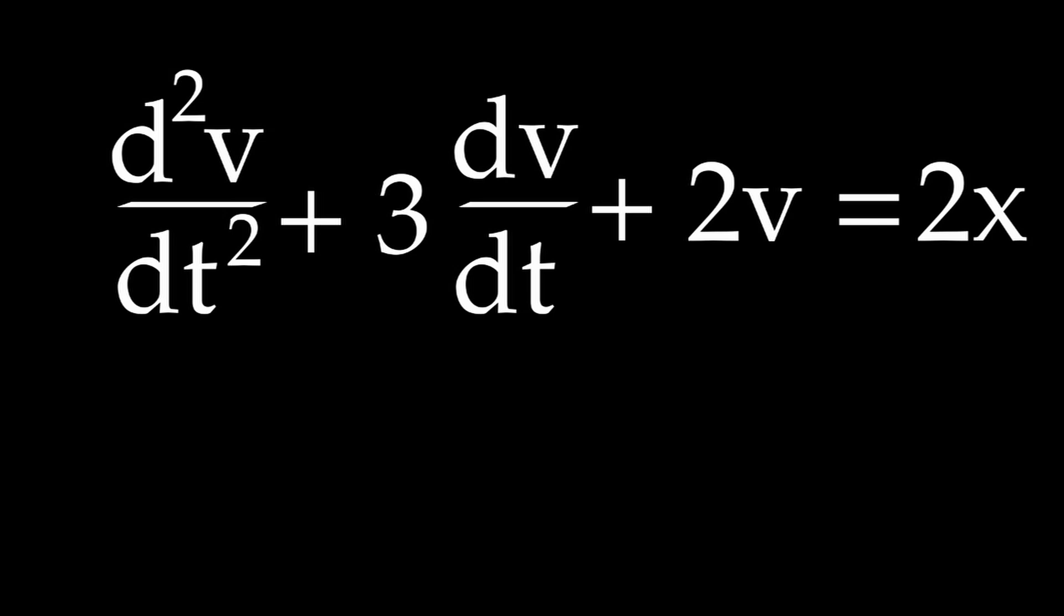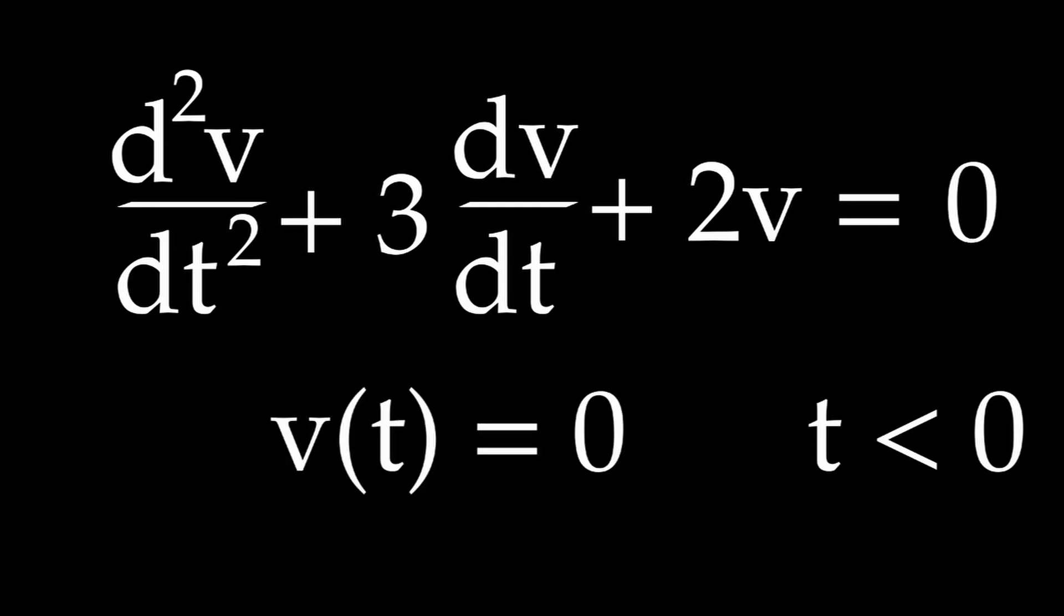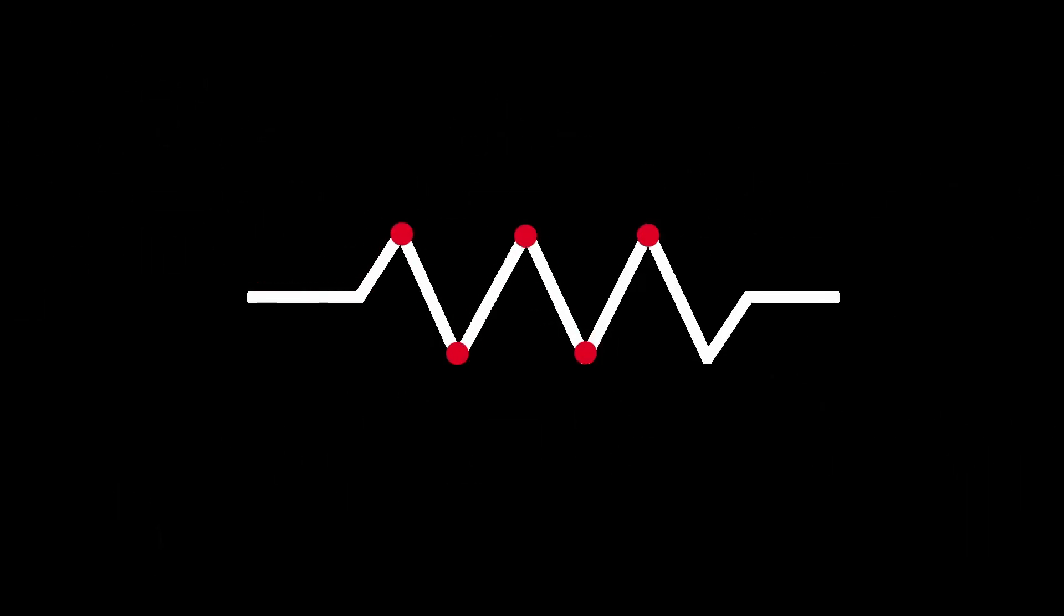So now, let's solve this differential equation with input the delta function. If you think about it logically, then before t equals zero, the input was all zero, the output must have been zero as well. It doesn't make sense for a passive circuit to react to nothing.